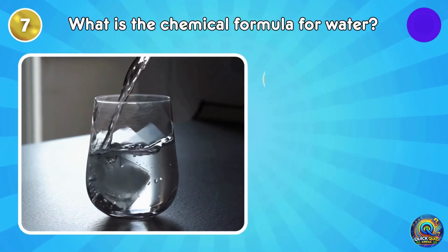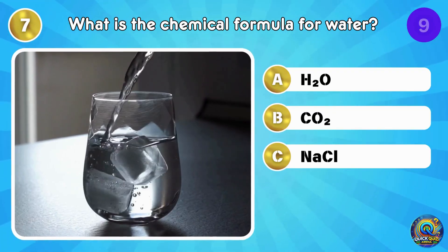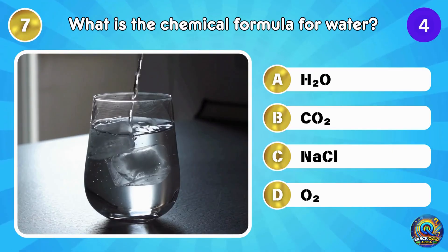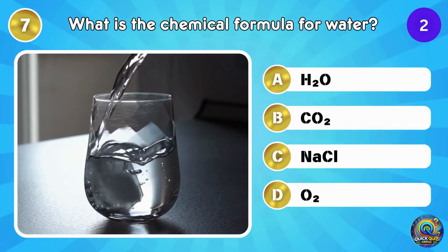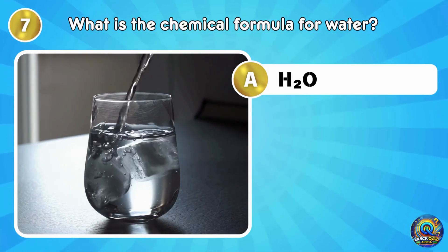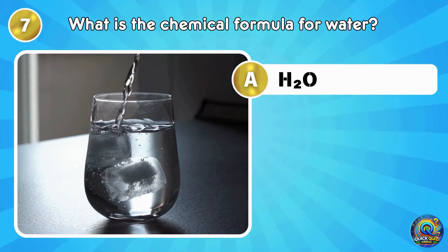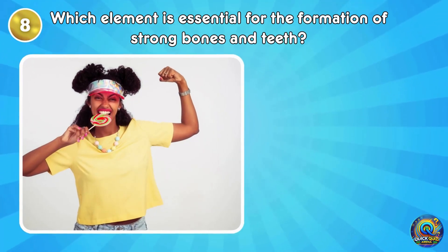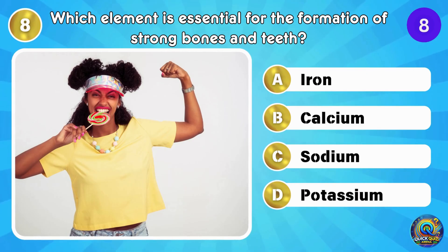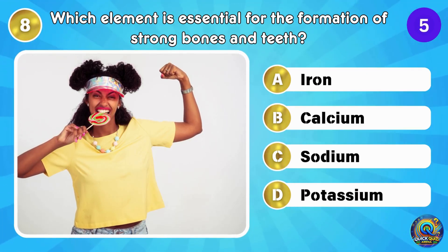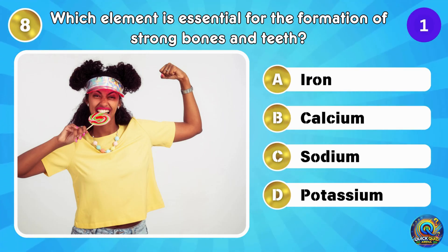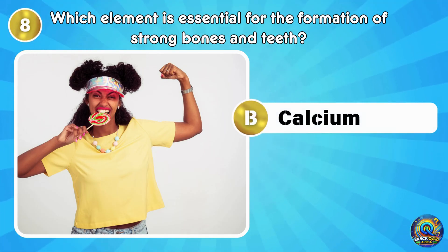What is the chemical formula for water? The answer is H2O — the good stuff that keeps us all going. Which element is essential for the formation of strong bones and teeth? The answer is calcium. Keep drinking that milk.